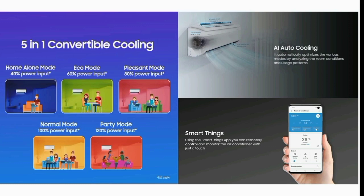The third option is the present mode. You can choose the present mode where the AC runs at 80%, and you can save the remaining 20% power.